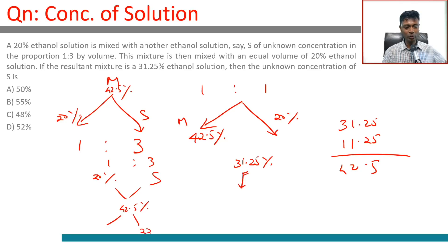difference is 22.5. 42.5 minus 20 is 22.5. Old-fashioned allegation method - so this should be 7.5 in the ratio 1 is to 3. This is 22.5, this is 7.5. So our S should be 42.5 plus 7.5